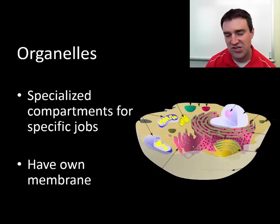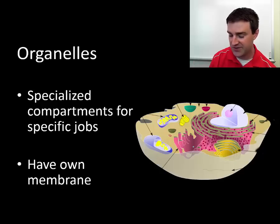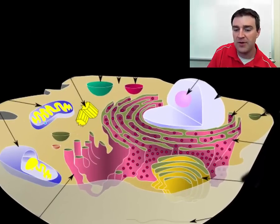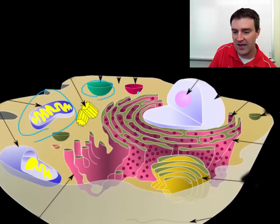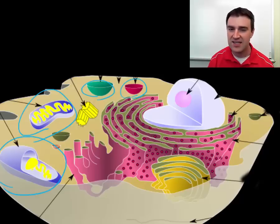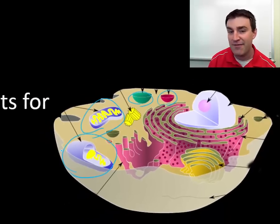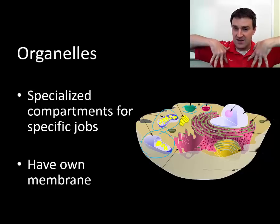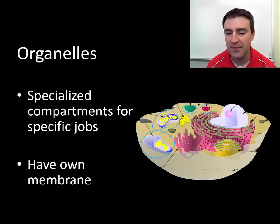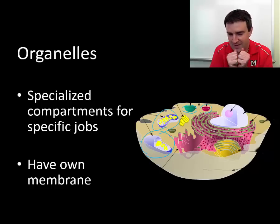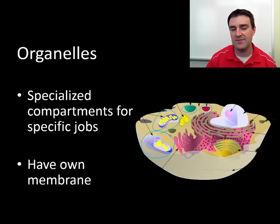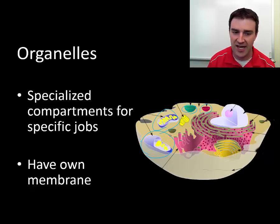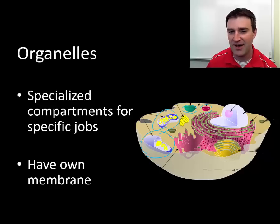Organelles are a generic term for something eukaryotes have that prokaryotes do not. Being newer cells, organelles are structures that form a separate compartment inside the cell. They have their own membrane, so they can control what comes in and out from the outside cytoplasm. That separate environment lets them do their own specific jobs, including structures like the mitochondria and the chloroplast.